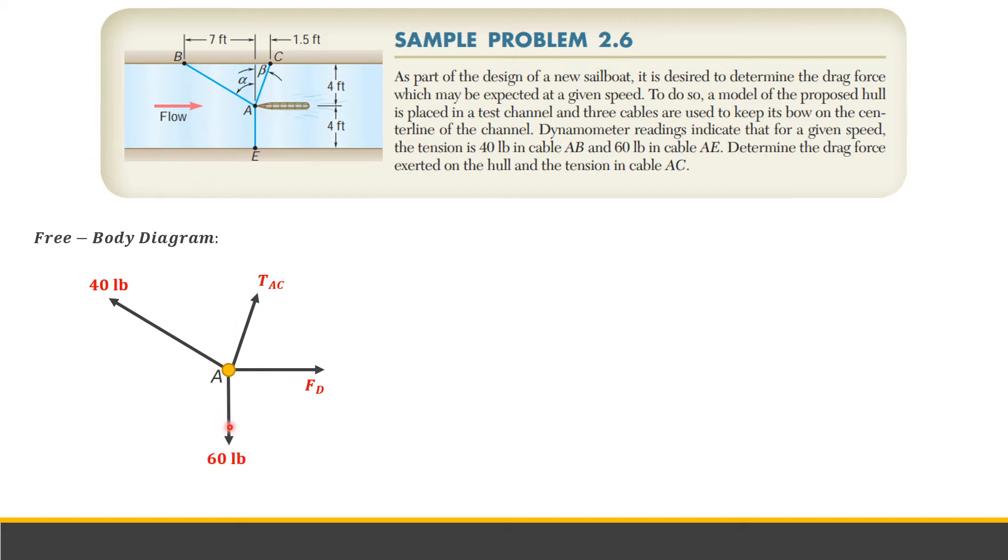Second tension is TAC which is unknown, so we will assume that TAC is in tension since we don't know if it's compression or tension. Drag force is, of course, the direction of the force is along with the flow. So we have FD as drag force on the hull. And then, tension at AE is 60 pounds. There are two angles involved. With respect to the vertical axis, we have alpha, the angle of tension at AB which is 40 pounds, and angle beta.